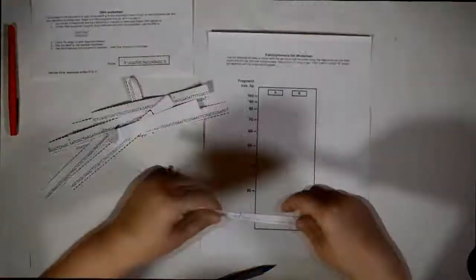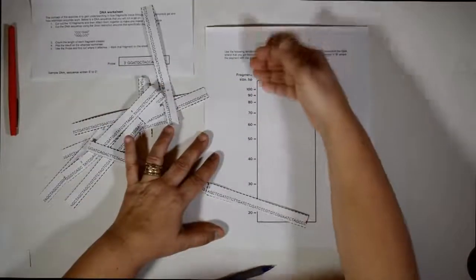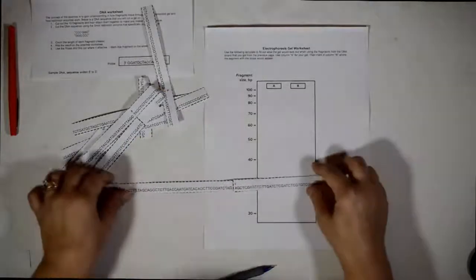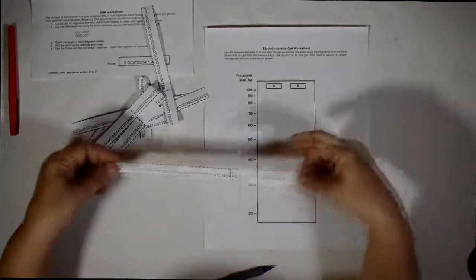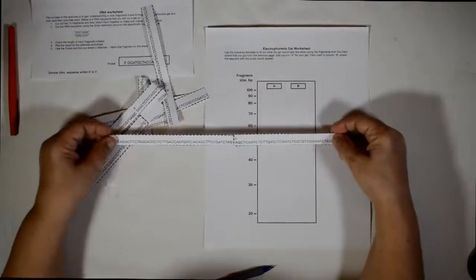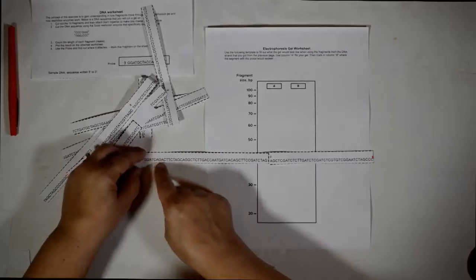So now what would happen is all these DNA fragments would be running down the gel and where they stay, that's what they're marking. You would be marking it to show how they would stay, they would be represented in this electrophoresis gel.